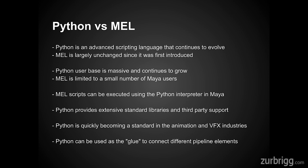Python can also be used as the glue to connect different pipeline elements. If you use different applications — one for modeling, one for animation, one for VFX — Python can be used to connect these elements together and allow the flow of data from the start of the pipeline all the way through to the end.